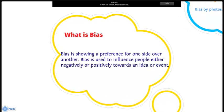What is bias? Bias is showing a preference for one side over another rather than being neutral. Bias is used to influence people either negatively or positively towards an idea or event. Bias is based in the beliefs and values of the people involved and therefore can be linked to their ideology.